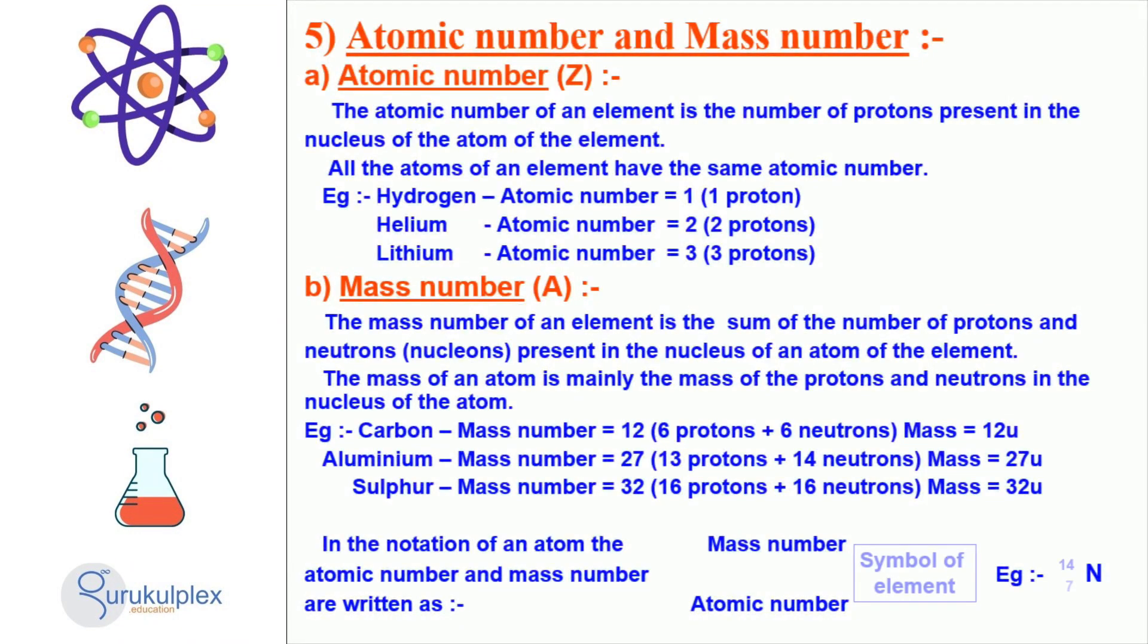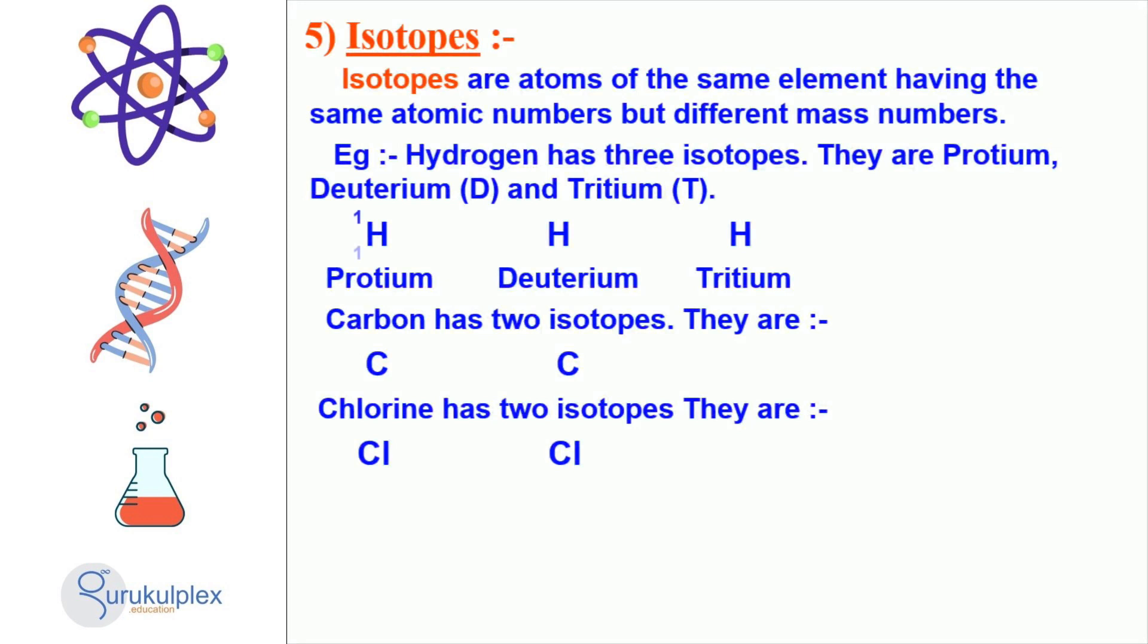Atomic number and mass number are essential to comprehending the design of an atom. The atomic number is the number of protons in the nucleus of the atom. It remains constant for each element and cannot be altered. The mass number is the amount of protons and neutrons in the nucleus of the atom. It determines the mass of the atom and is mainly relied upon the mass of the protons and neutrons inside the nucleus. The symbol for an atom is made up of the element's symbol and the atomic number and mass number expressed as a subscript and superscript respectively. Different atoms of the same element can have various mass numbers, leading to various isotopes.